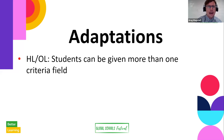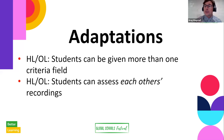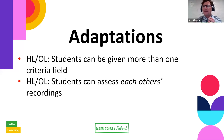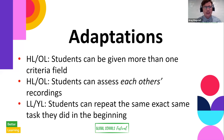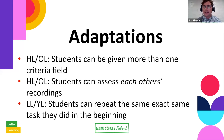In terms of adapting: students can be given more than one criteria field — higher levels or older learners could look at two, three, or four at the same time. Students can also assess each other's recordings, though I've found younger learners are a bit reluctant to say 'this could be improved.' Maybe it's more for older learners. For lower levels, they can simply repeat the same task they did at the beginning.